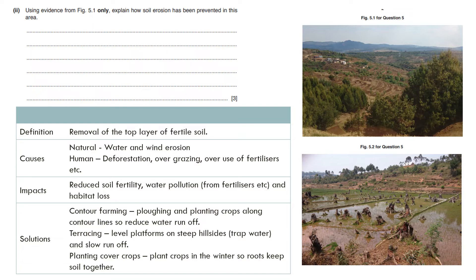The question goes on to explain how soil erosion has been prevented in this area. For that I need to identify the definition of soil erosion. It's removal of the top layer of fertile soil and that could be done through water or wind erosion, through deforestation. I want to know how they try to prevent the causes of soil erosion.